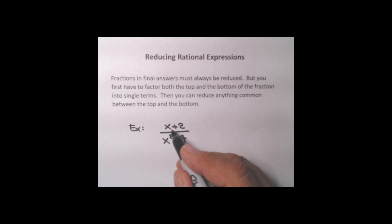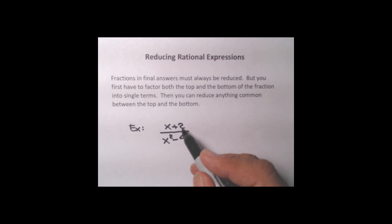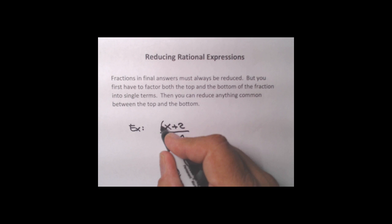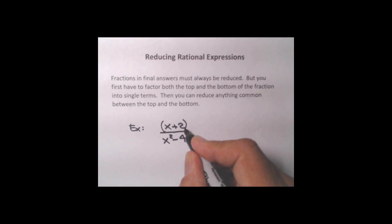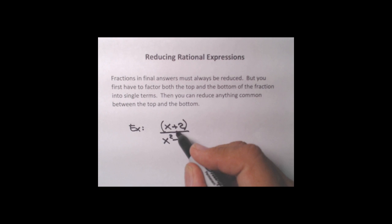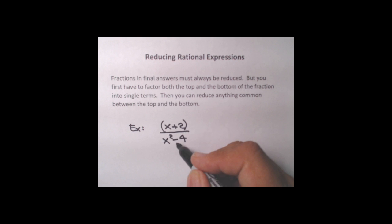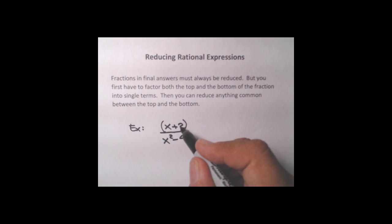Let's take a look at this first example. The upstairs is x plus 2, and there's no GCF I can pull out of this, so the only way I can make this a single term is to use an old trick: put parentheses around it. The parentheses mean that x plus 2 is a complete package — a single term — and we can only reduce it against something downstairs that's exactly the same, x plus 2.